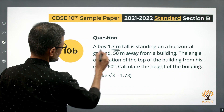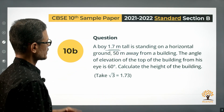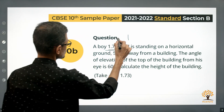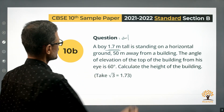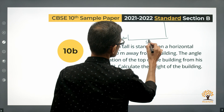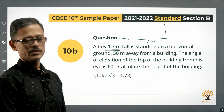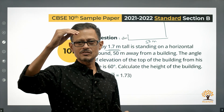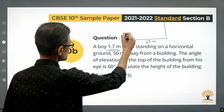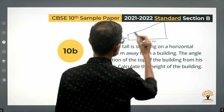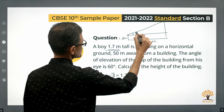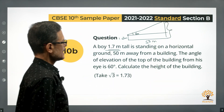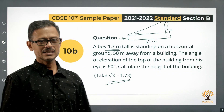A boy 1.7 meters tall is standing on horizontal ground, 50 meters away from a building. The distance between the foot of the building and the boy is 50 meters. The angle of elevation to the top of the building from his eye level is 60 degrees. Eye level here is practically the height of the boy, at 1.7 meters. What we need to find is the height of the entire building, and we are told to take root 3 equal to 1.73.